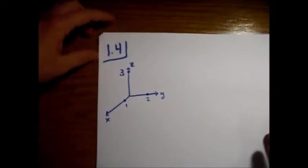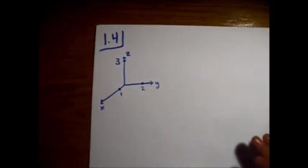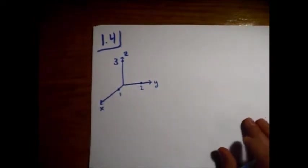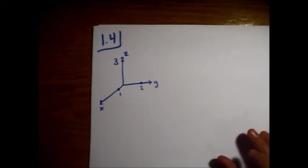So this is Griffith's E&M problem 1.4. It says use the cross product to find the components of the unit vector n-hat perpendicular to the shaded plane in figure 1.11.